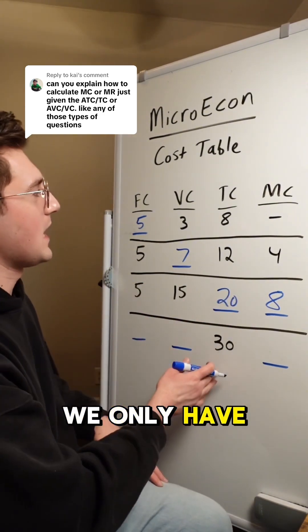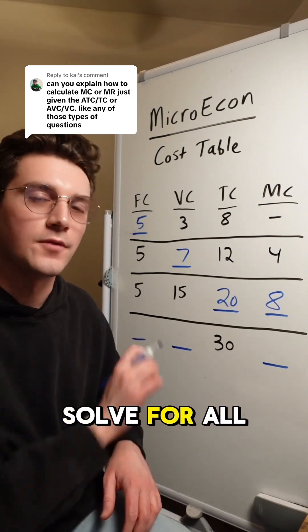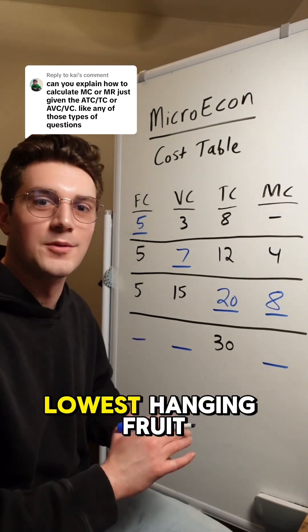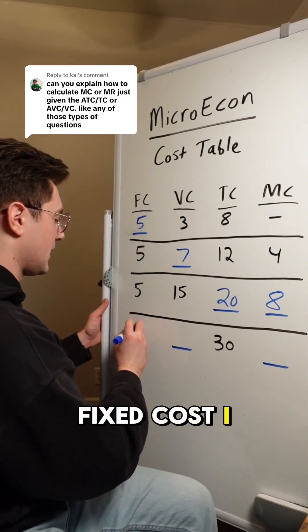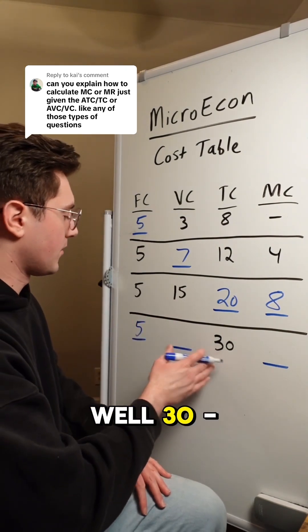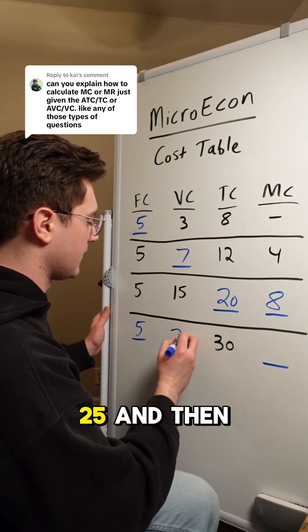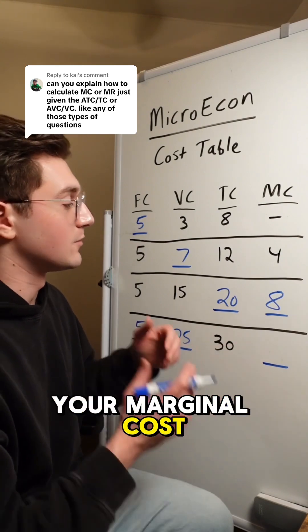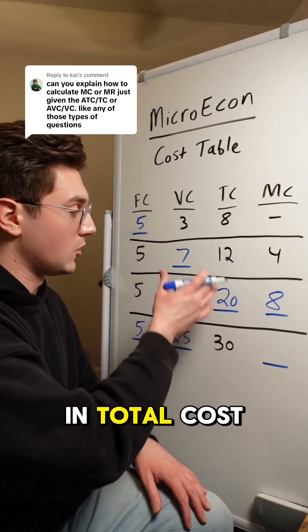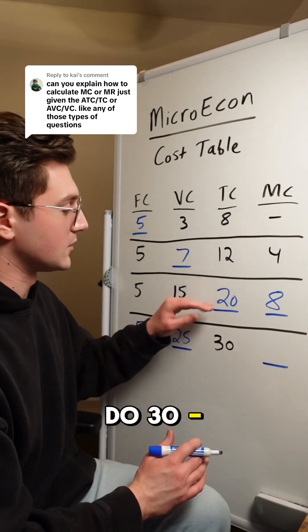All right, lastly here, this last row, we only have total cost. How can we solve for all these values here? Well, I'm going to start with the lowest hanging fruit right here. Our fixed cost, I know, is going to be five. And then from there, I'm going to say, okay, well, 30 minus five, that's going to be 25. And then to finish this off, your marginal cost. Remember, that's all about the change in total cost here. So I'm going to do 30 minus 20 equals 10.